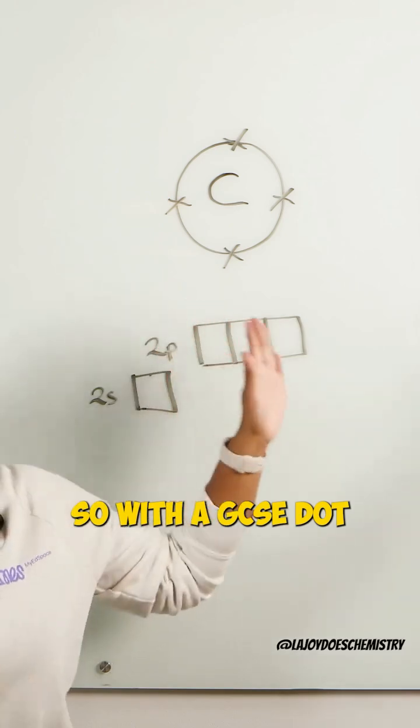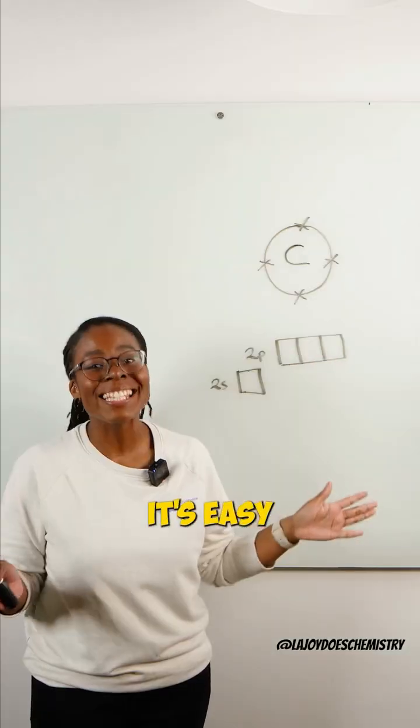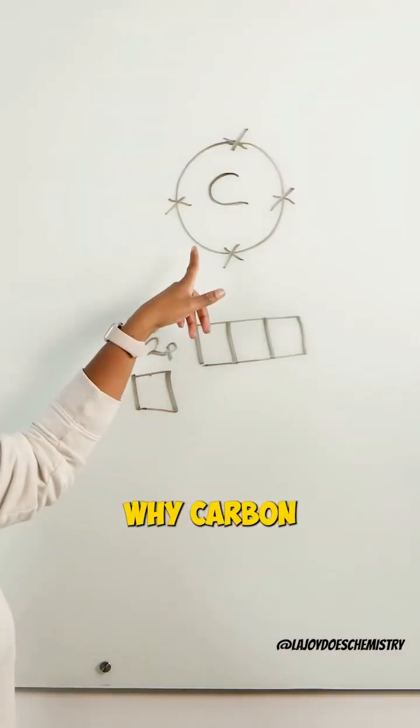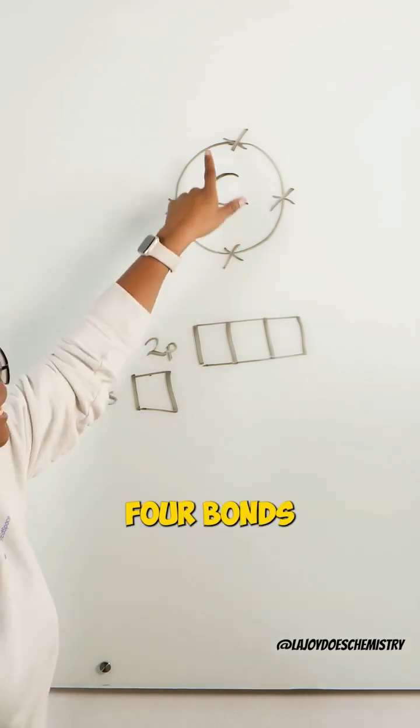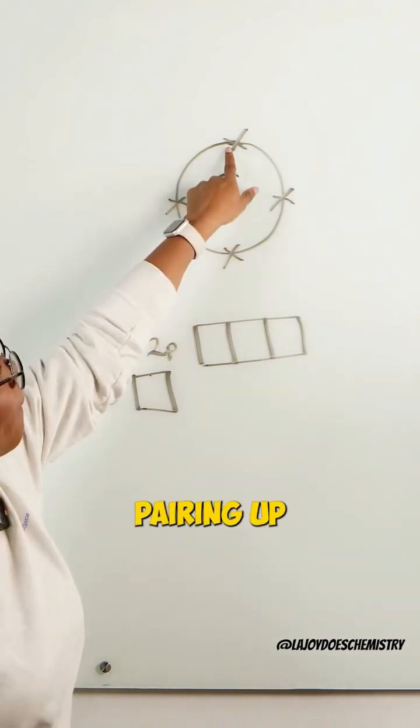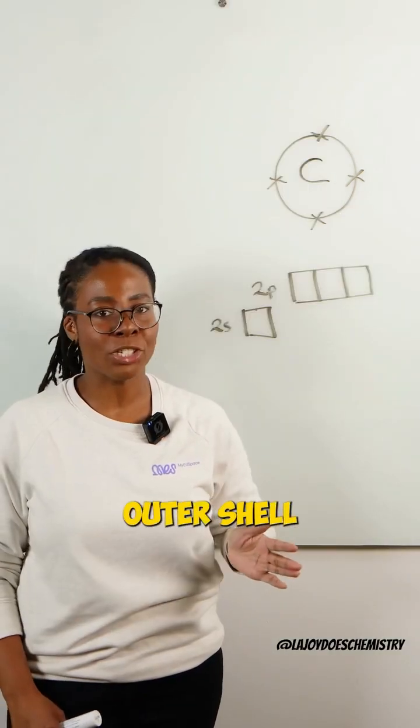With a GCSE dot and cross diagram, it's easy to see why carbon would want to make four bonds, each incoming atom pairing up with one of these four electrons in its outer shell.